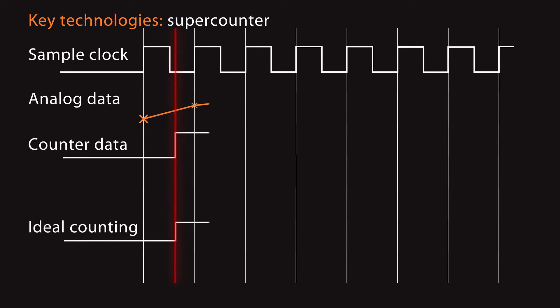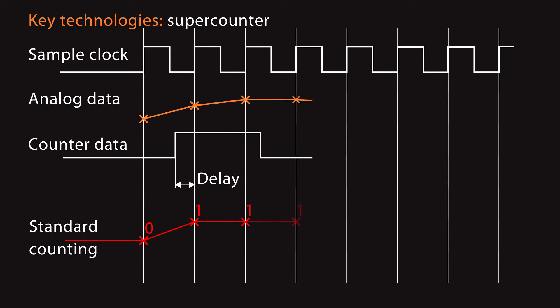The pulses from the digital counter sensor happen all the time between analog samples. A normal counter will count at the next sample clock with a delay. So it will start at 1, then remain at 1 for 2 samples, jump to 2 with a delay, and so on.